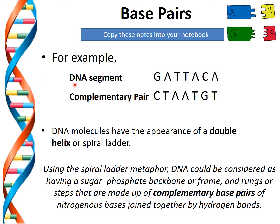For example, looking at this short segment of DNA — the coding strand — we have G-A-T-T-A-C-A: guanine, adenine, thymine, thymine, adenine, cytosine, and adenine. To code the complementary pair, we apply the base pair rule — the matching rule that G always pairs with C and A always pairs with T.